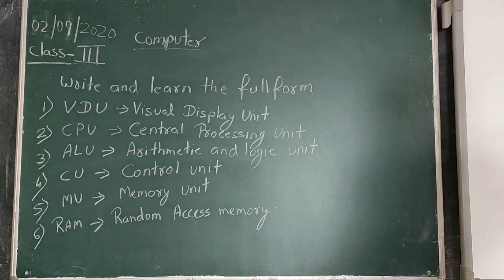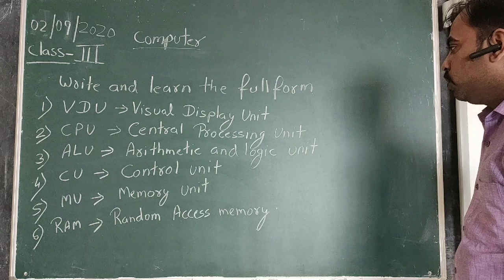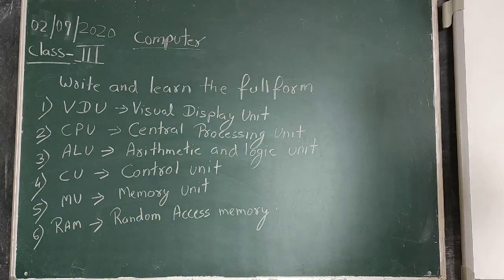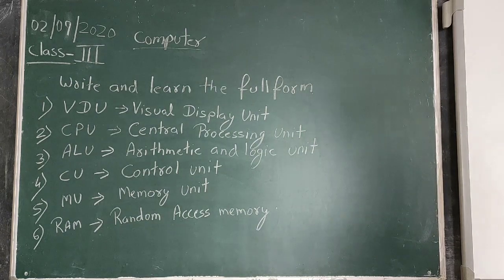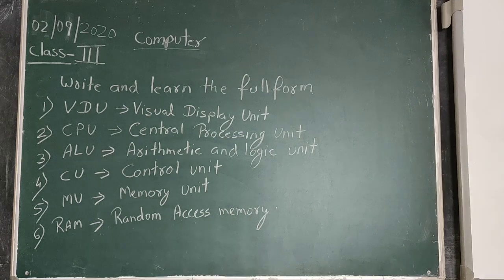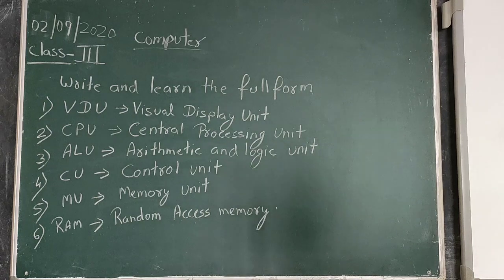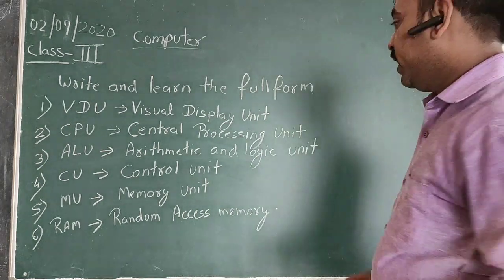So the full forms: VDU - Visual Display Unit, CPU - Central Processing Unit, ALU - Arithmetic and Logic Unit, CU - Control Unit, MU - Memory Unit, RAM - Random Access Memory. I hope that if you have not noted down, you can note it down from here and prepare for the exam.